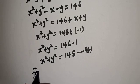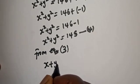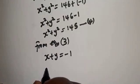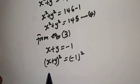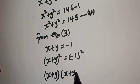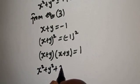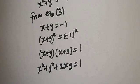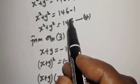Now from equation 3, S plus Y equals minus 1. Let's square both sides: (S plus Y) squared equals (minus 1) squared. Expanding the left side: S squared plus Y squared plus 2XY equals 1. But S squared plus Y squared equals 145.